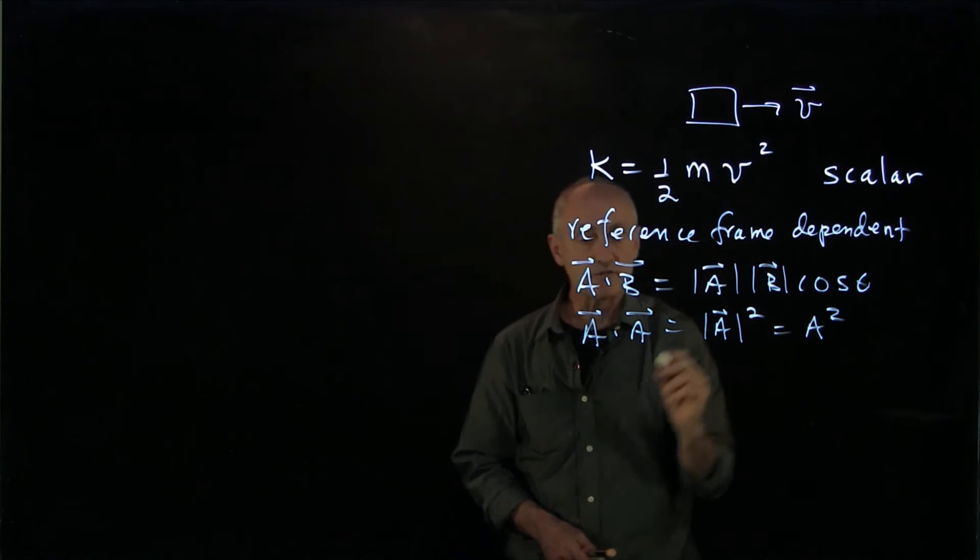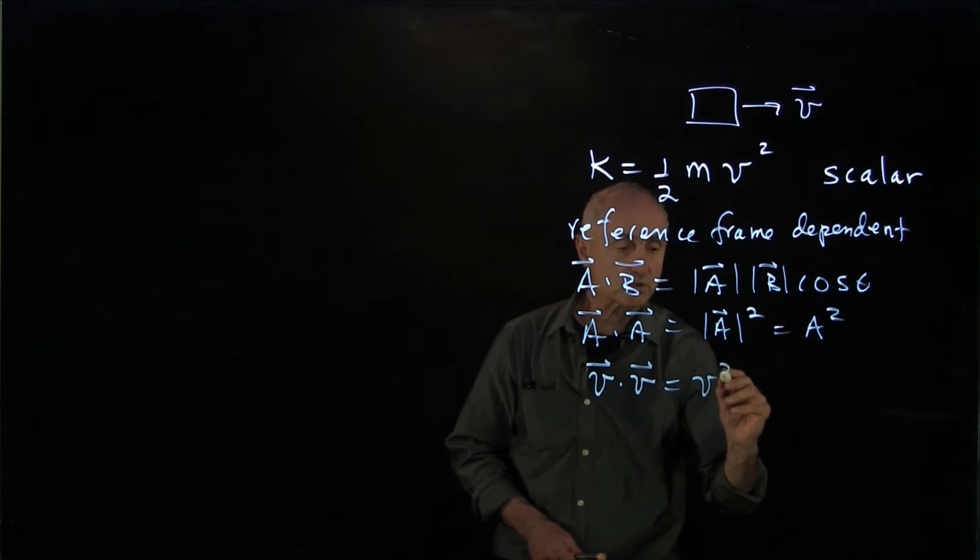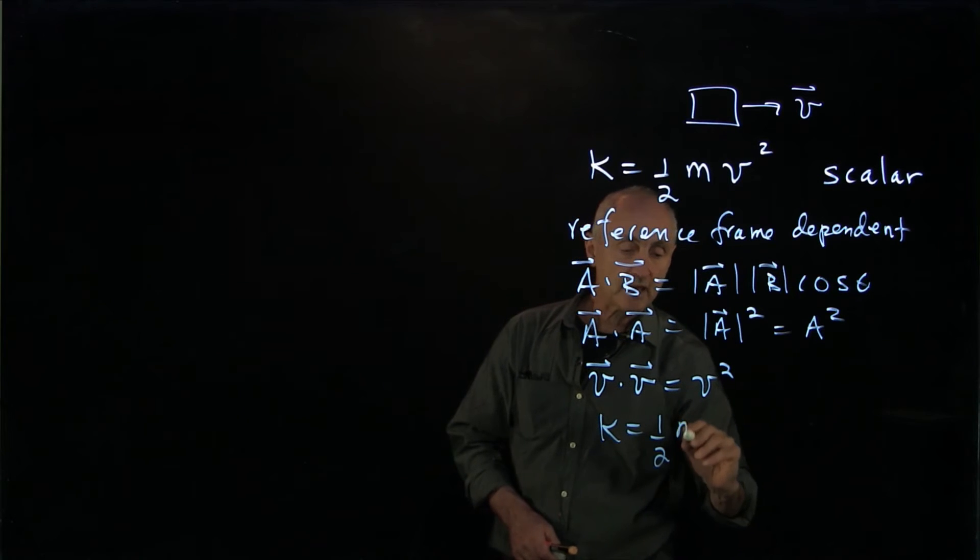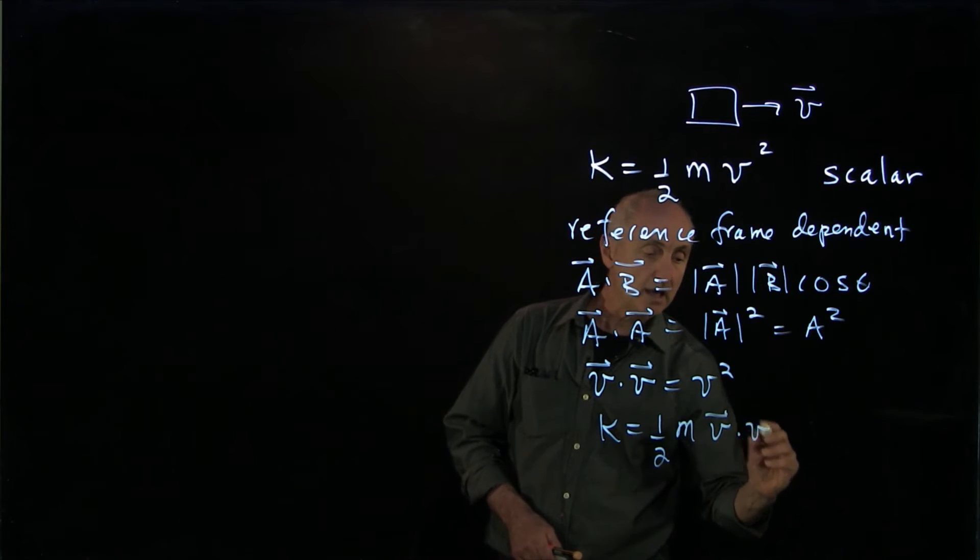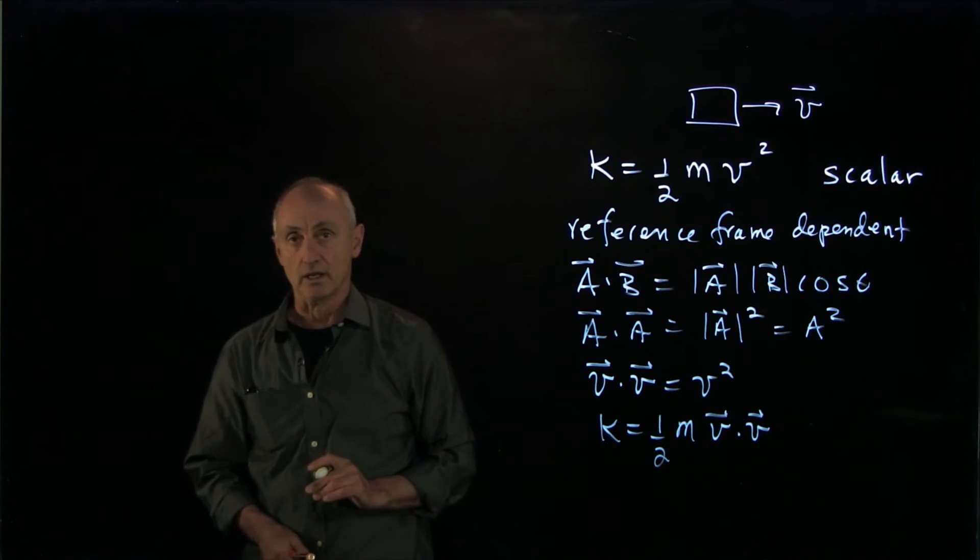So here we have a v squared. So the dot product v dot v, v squared, enables us to write kinetic energy as 1/2 m v dot v. And we see our first example of a scalar product describing a physical quantity.